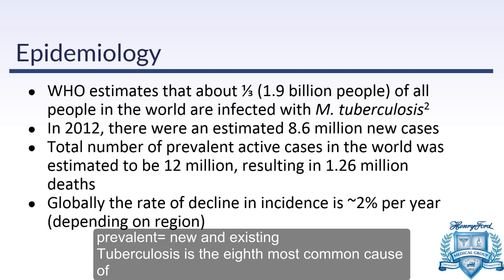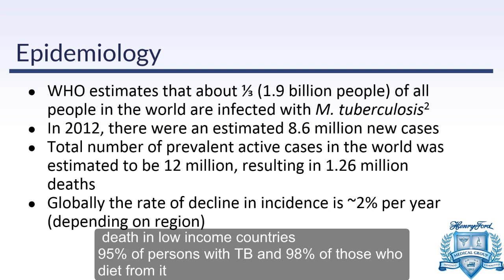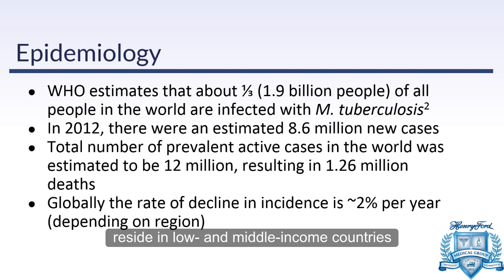Looking at the epidemiology, the World Health Organization's most recent data from 2012 estimates about a third of the population — approximately 1.9 billion people — are infected with active or latent TB. In 2012 alone there were 8.6 million new cases. The total prevalence of active cases is about 12 million, resulting in 1.2 million deaths per year. However, the rate is on decline at about 2% per year overall, varying drastically depending on the region.